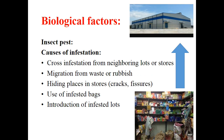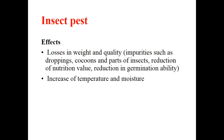Now for biological factors — insect pests. The causes may be cross-infestation from neighboring lots or local grocery stores, migration from waste or rubbish dustbins, and hiding places in the store like cracks, crevices, holes, etc. Also, use of infested bags and introduction of infested grain from outside. The effects include losses in weight and quality.